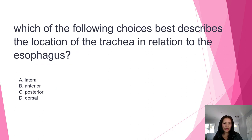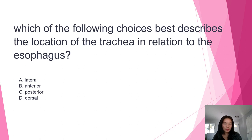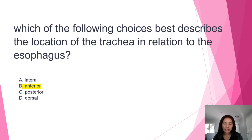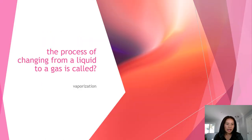Next question: which of the following best describes the location of the trachea in relation to the esophagus? A) lateral, B) anterior, C) posterior, or D) dorsal? The answer is B, anterior. In anatomy, the trachea is located anterior to — in front of — the esophagus.